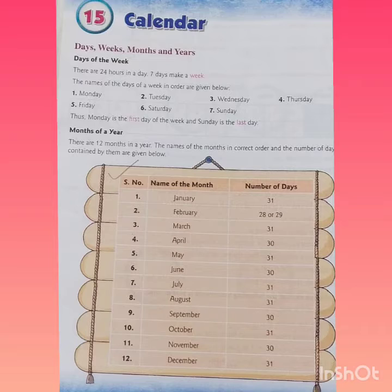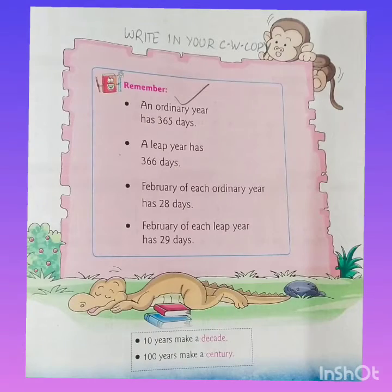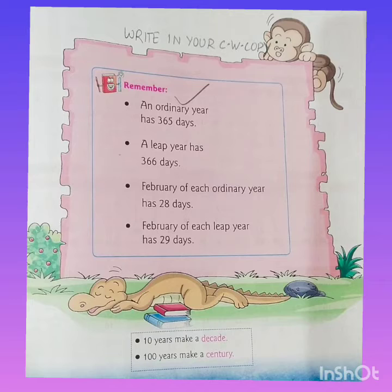The number of days contained by them are given in the table below. You can also note that February has 28 or 29 days. An ordinary year has 365 days and a leap year has 366 days. A year that is completely divisible by four is called a leap year, and the year which is not a leap year is called an ordinary year. February of each ordinary year has 28 days and February of each leap year has 29 days.